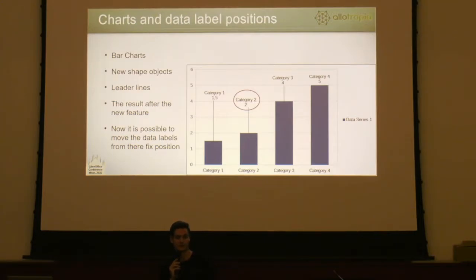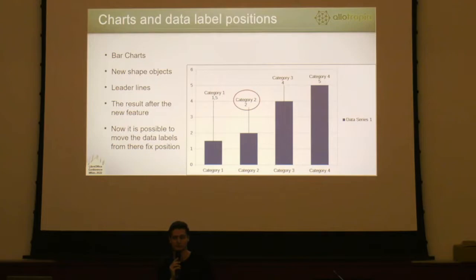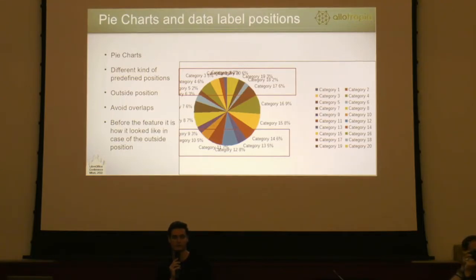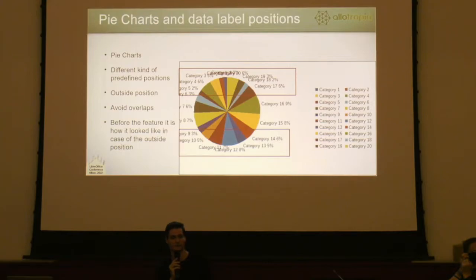There were a lot of other things as well, like import-export filters. Moving the data labels is working in case of all chart types, also the import and export. Let's see another chart type. On this slide you can see how it looked like in case of the pie chart before any implementation. It was simple for the outside position and it wasn't possible to move the labels yet. There were also many overlaps and unreadable labels. The picture was taken after an ODS export. The pie chart has different kinds of label positions, so it was harder to handle the movements from these positions.